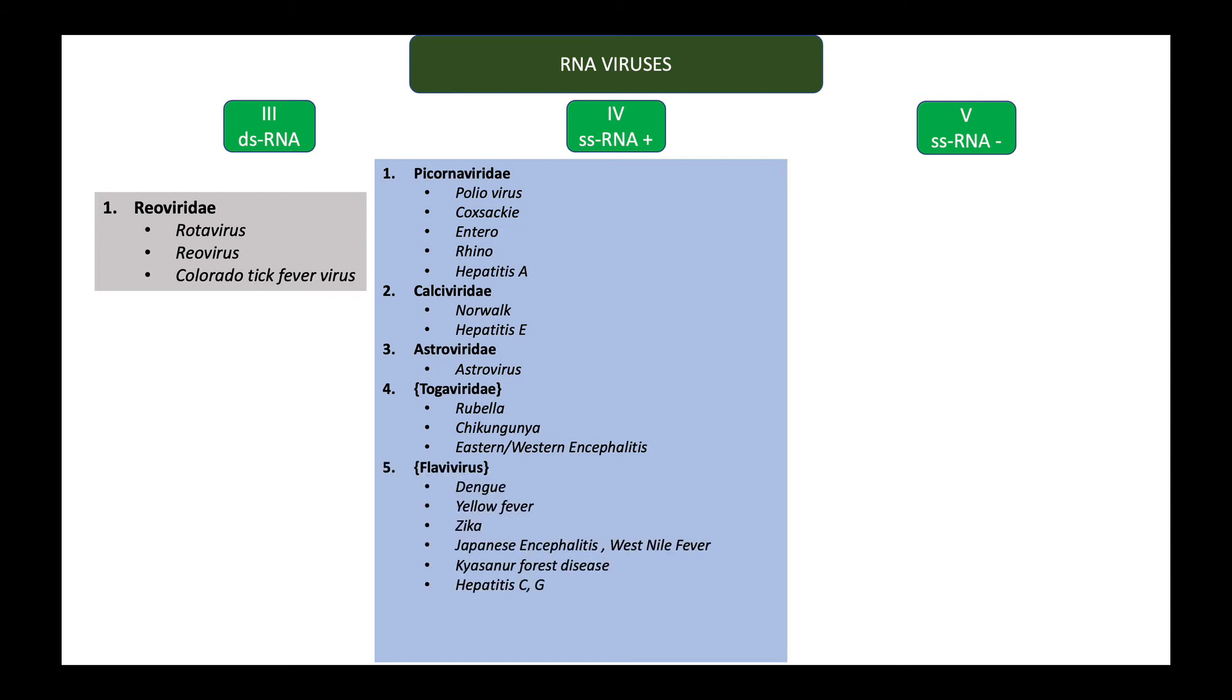Eastern and Western equine encephalitis viruses are responsible for encephalitis. Next we have the Flavivirus family which is an important pathogenic group. Under this we have dengue virus currently endemic in many parts of the world, yellow fever virus seen in Sub-Saharan Africa and South America, Zika virus which can be teratogenic in pregnancy and cause microcephaly in the fetus. Japanese encephalitis and West Nile encephalitis can cause seasonal endemic encephalitis in many third world nations. Kyasanoor forest disease is localized to Karnataka in India. Hepatitis C and hepatitis G affect the liver.